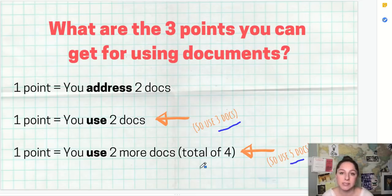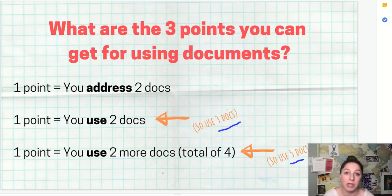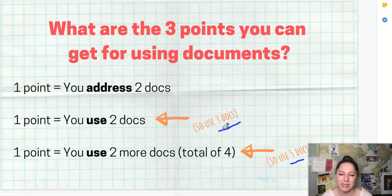A lot of students ask if they can get points taken off if they mess up. No — there's nowhere in the rubric where points can be deducted or taken away from you. So if you have a really good essay and you totally screw up one document, that's fine. You don't lose the points you've already earned; you just don't get that point you were going for on that document. That's why you should be addressing at least three documents, or really five, so if one doesn't make sense, you still have enough to earn the point.